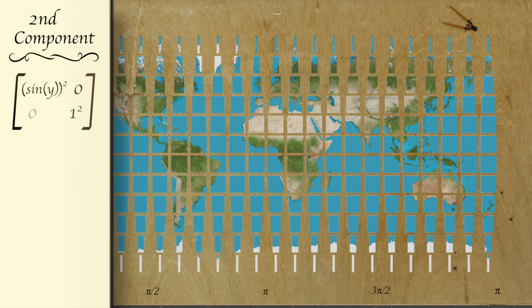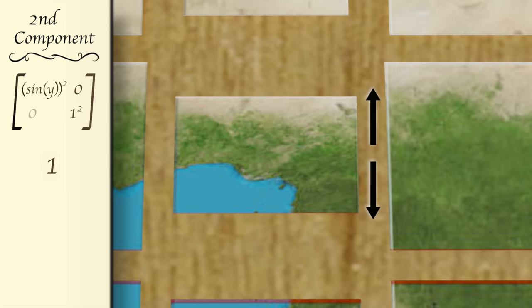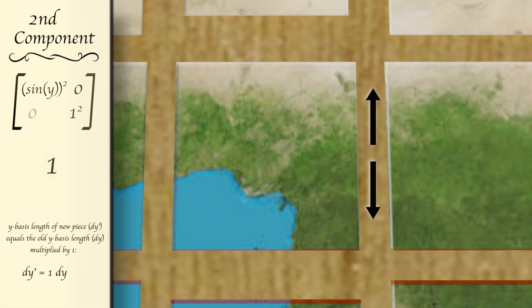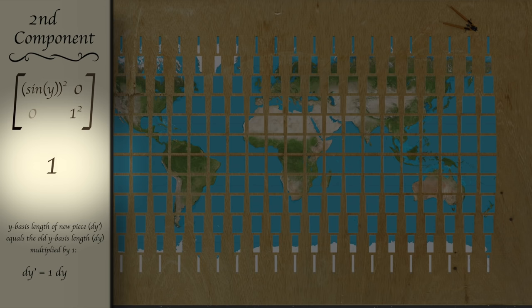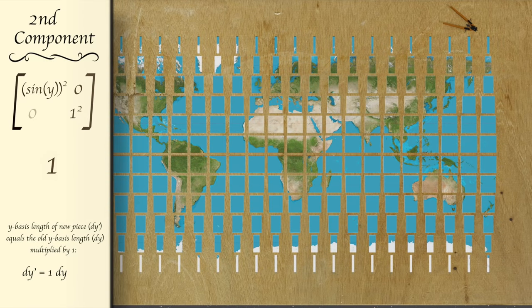Now, the second component tells us, how much to stretch or shrink the y length of the piece. Here, everywhere on the map, that component is equal to 1. So this tells us that the y length of all our pieces remains unchanged.